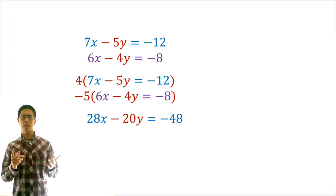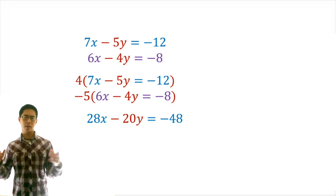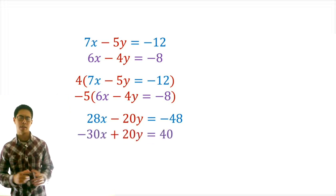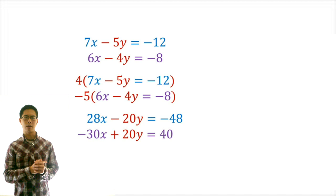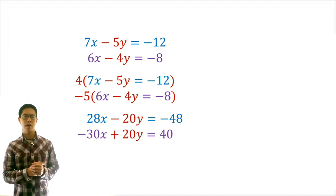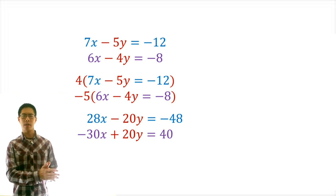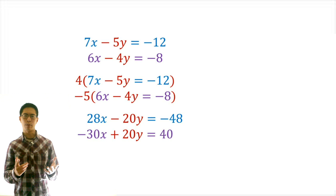For the top equation: 7x times 4 equals 28x, negative 5y times 4 equals negative 20y, and negative 12 times 4 equals negative 48 — giving us 28x minus 20y equals negative 48. For the second equation: 6x times negative 5 equals negative 30x, negative 4y times negative 5 equals 20y, and negative 8 times negative 5 equals 40 — giving us negative 30x plus 20y equals 40. Notice that now we have negative 20y in the top equation and 20y in the bottom equation, which are the same value but opposite signs — exactly what we wanted.